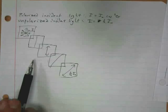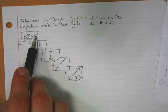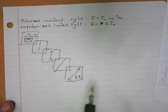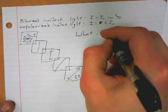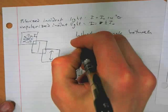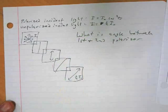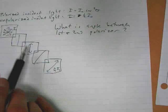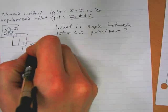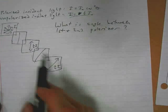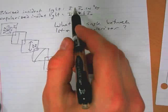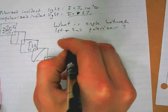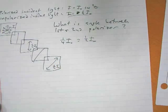Let's take an example. Say we initially have unpolarized light with some intensity I₀. It passes through a first polarizer, then through a second polarizer. When it comes out of the second polarizer, its intensity is one-fourth the original. I want to find the angle between the first and second polarizer.